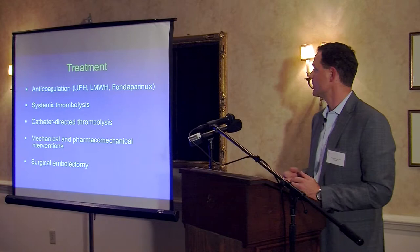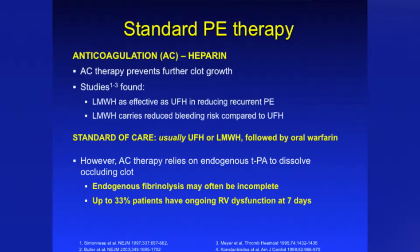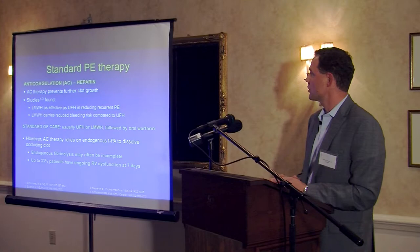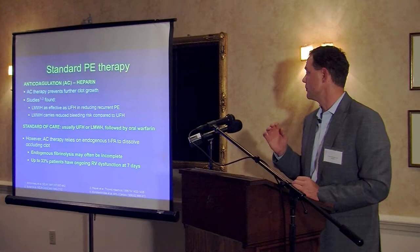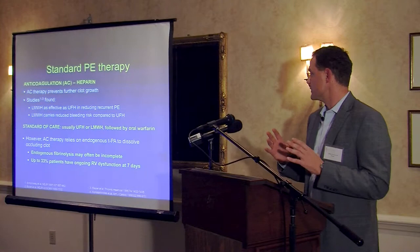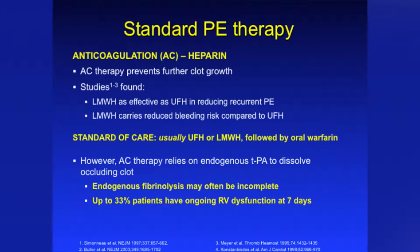Our main treatments include anticoagulation, systemic thrombolysis, catheter-directed thrombolysis, mechanical and pharmacomechanical interventions, and surgical embolectomy. Anticoagulation — everyone with a PE who is not a high bleeding risk will be started on IV heparin or Lovenox. However, anticoagulation only prevents further propagation of the clot; it does not actually dissolve existing clot. You're relying on the body's own natural TPA. Patients with heart strain will still have heart strain when you start heparin, and after seven days, 33% of patients have ongoing RV dysfunction.